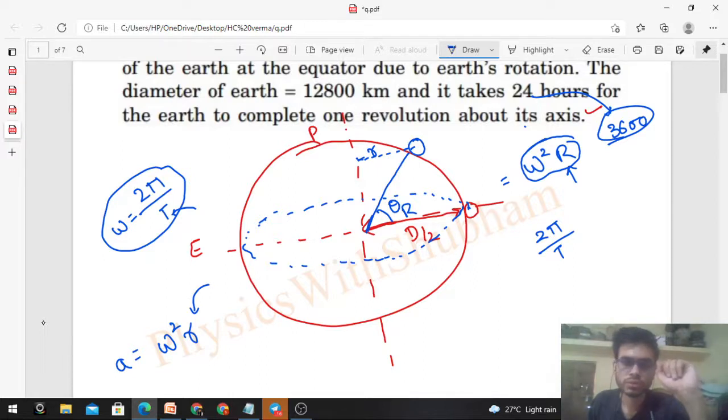Okay, fine. So once we know the value of small r, then we can find out the value of acceleration for any particle on the surface of earth which is at an angle theta from the equatorial position.